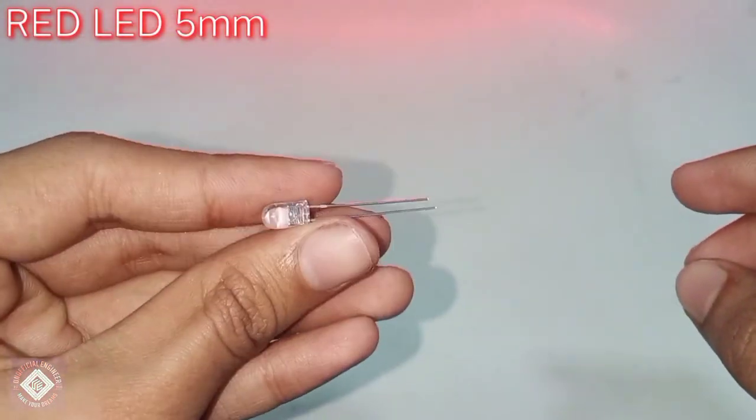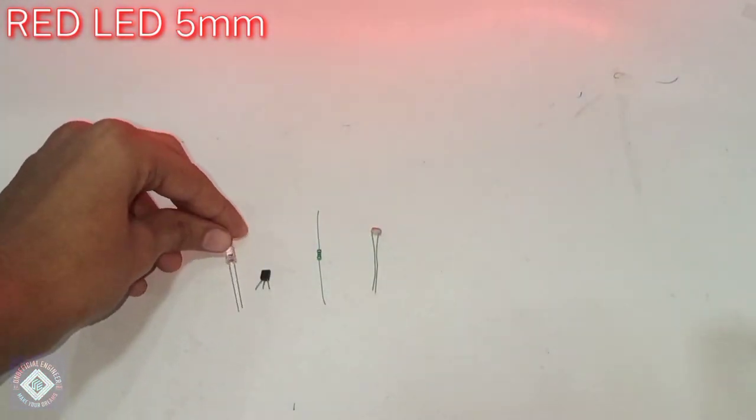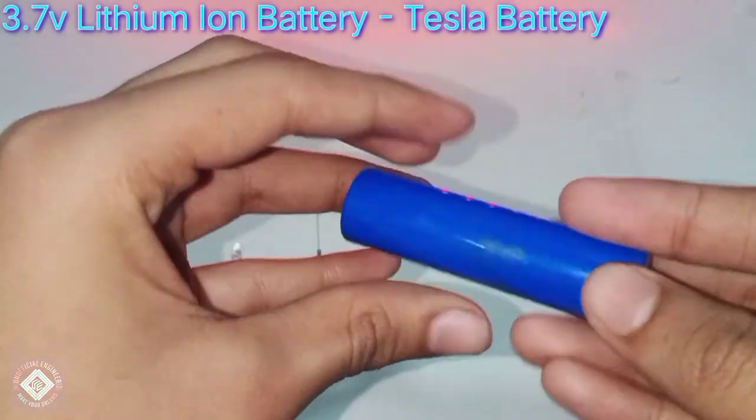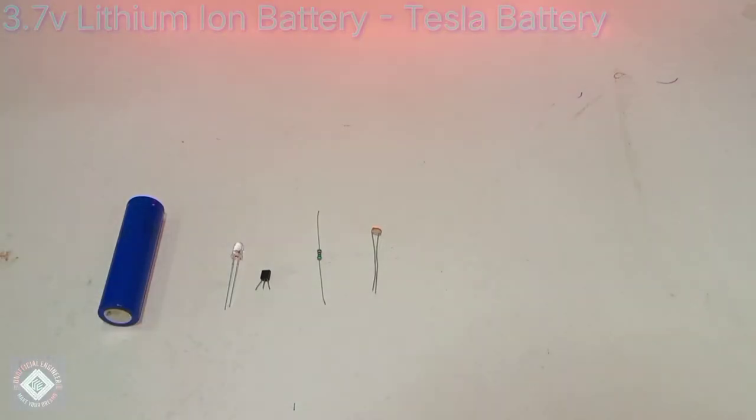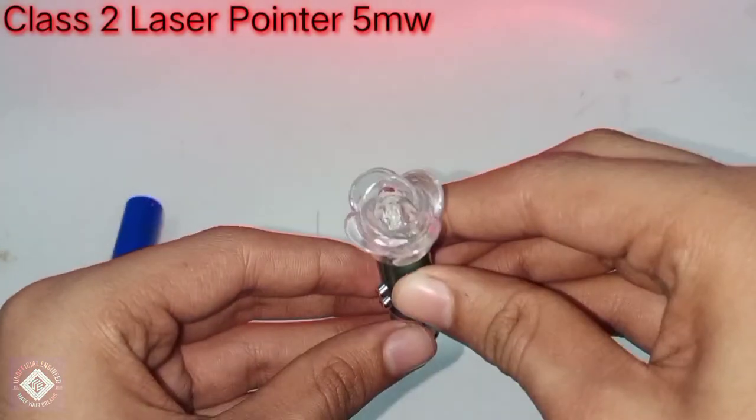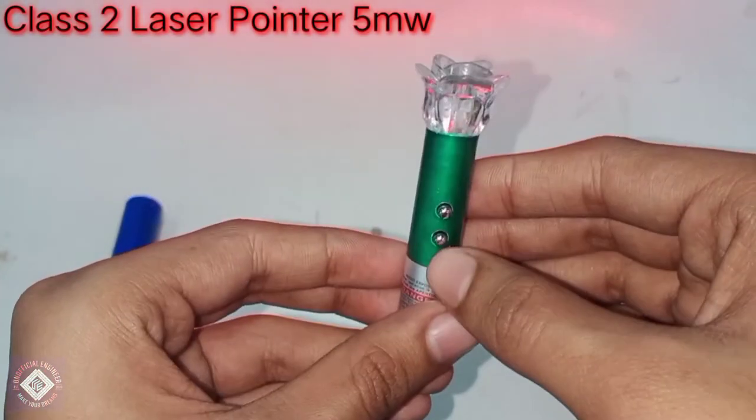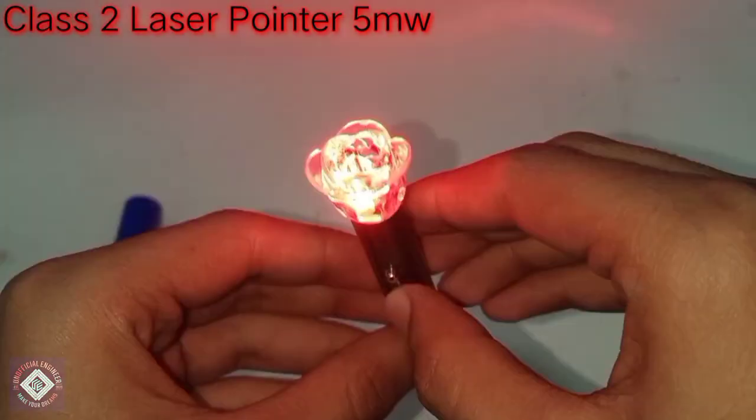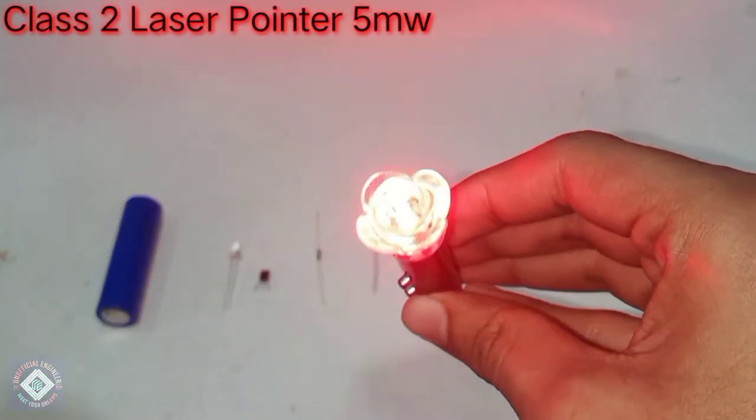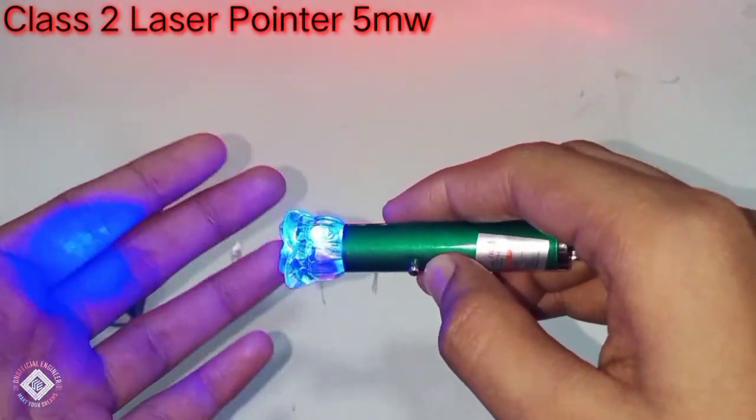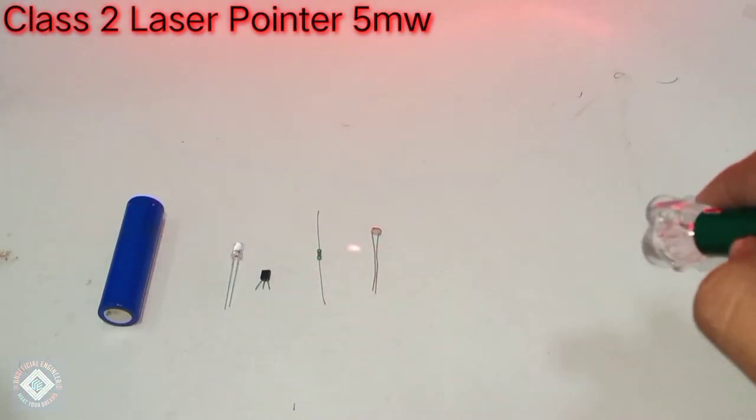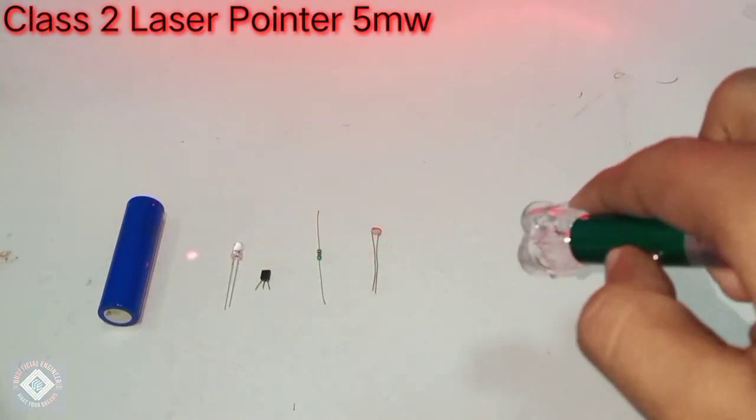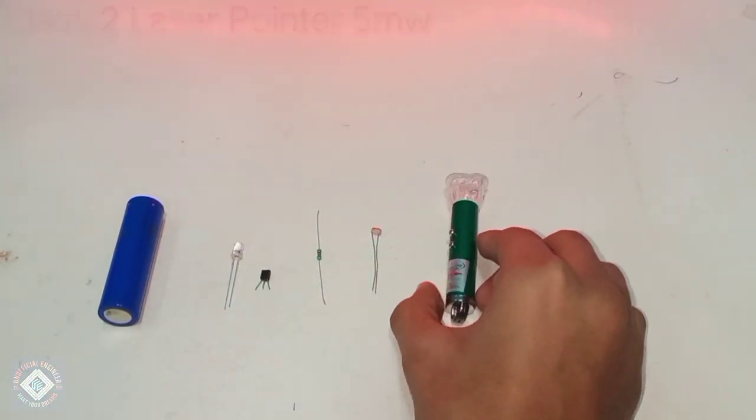We will also need a red LED for indication, here I am using 5mm. We will need a 4.2 volt lithium-ion battery. When fully charged it is 4.3 volts, normally 3.7. Here I am using a cheap 5 milliwatt class 2 laser. Valentine, will you be my Valentine? No, I will protect you. The lower button is for the lasers. As you can see the laser is pretty weak, I will upgrade this later.